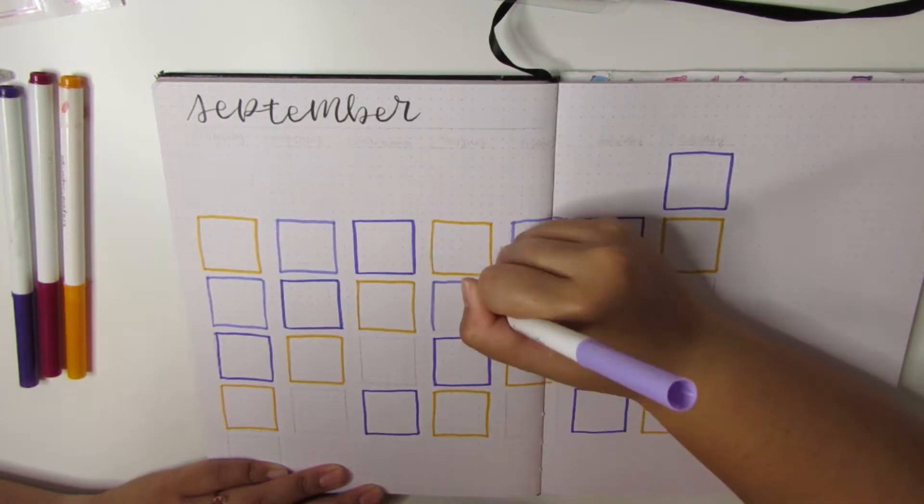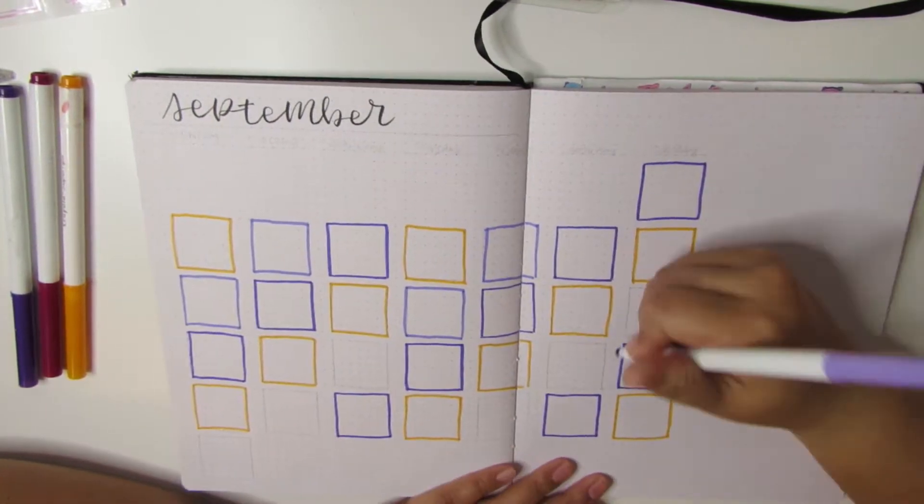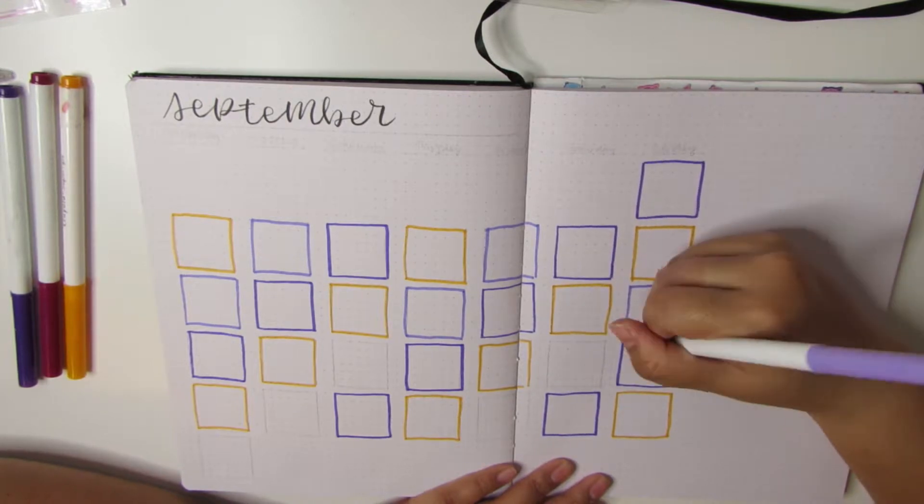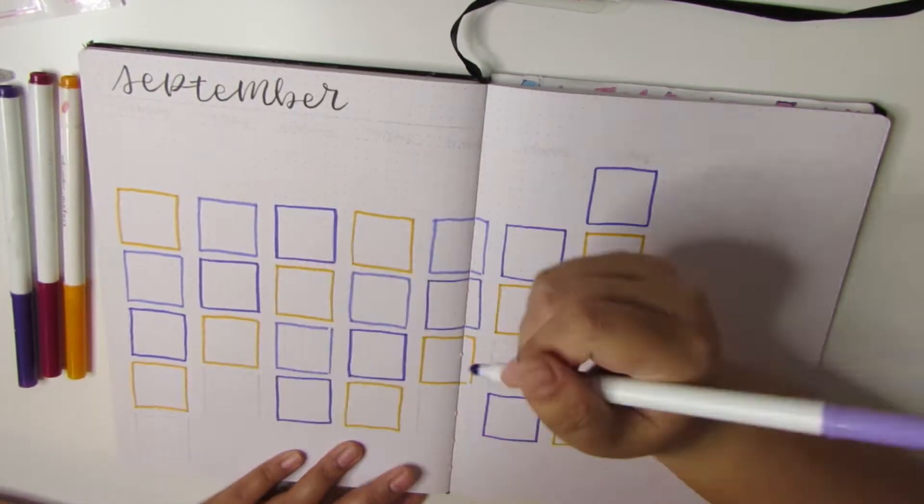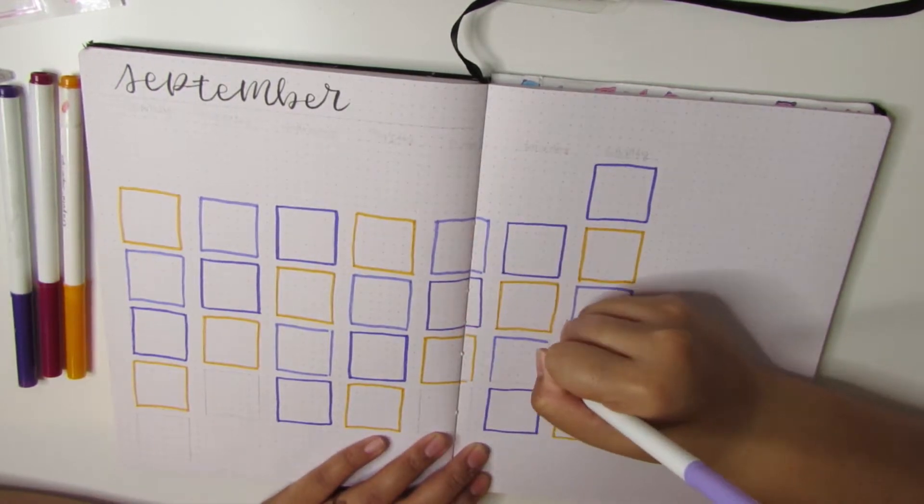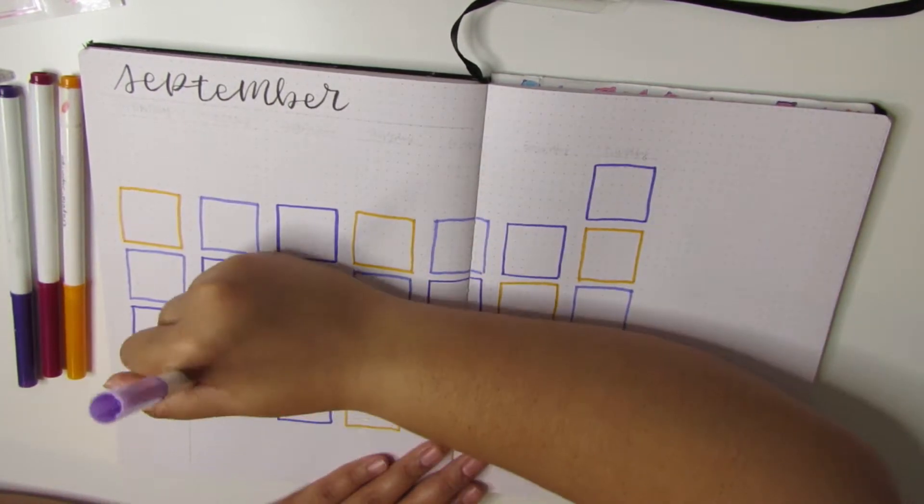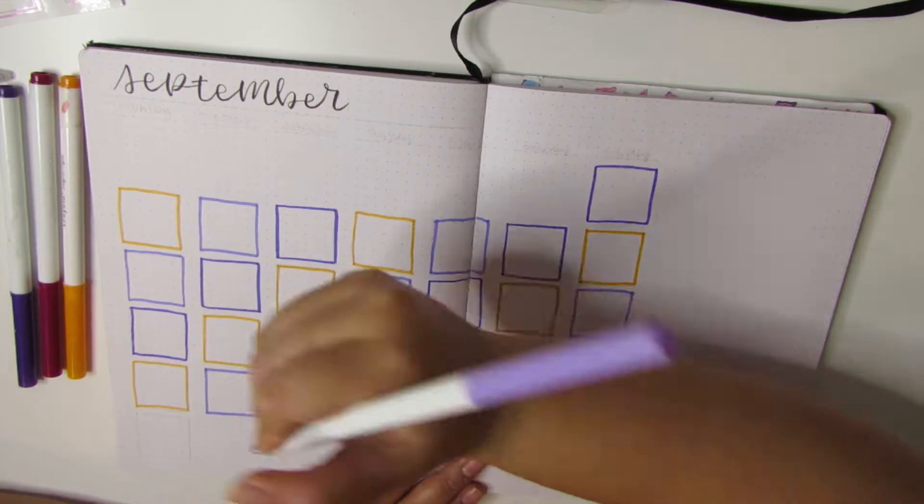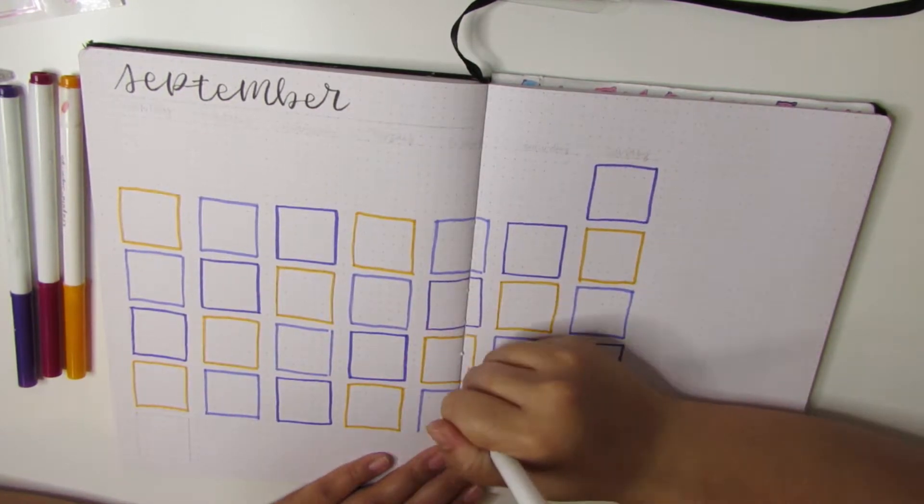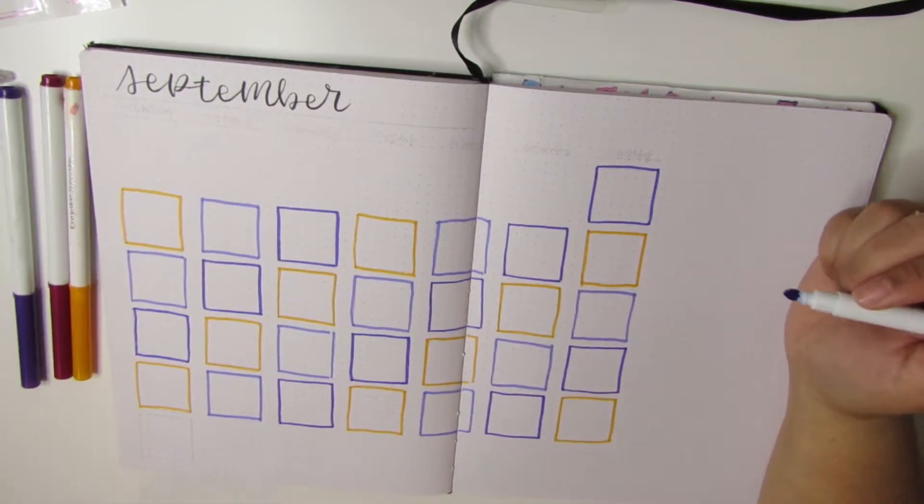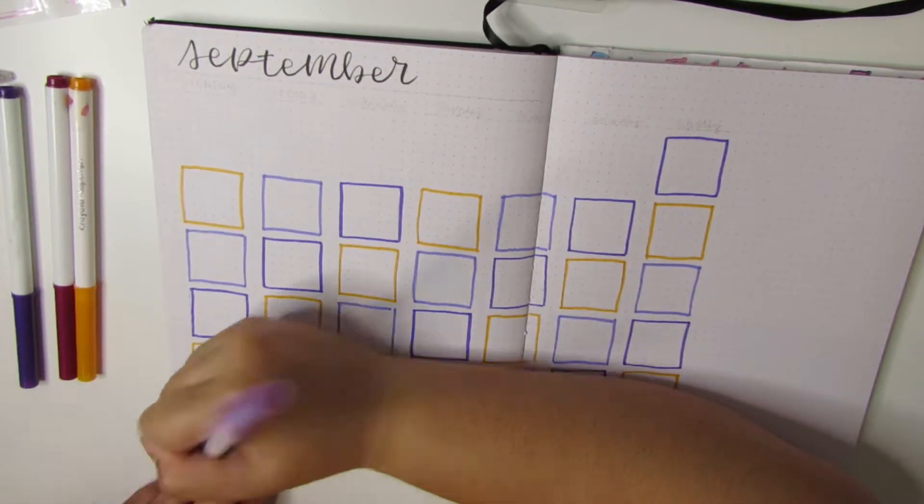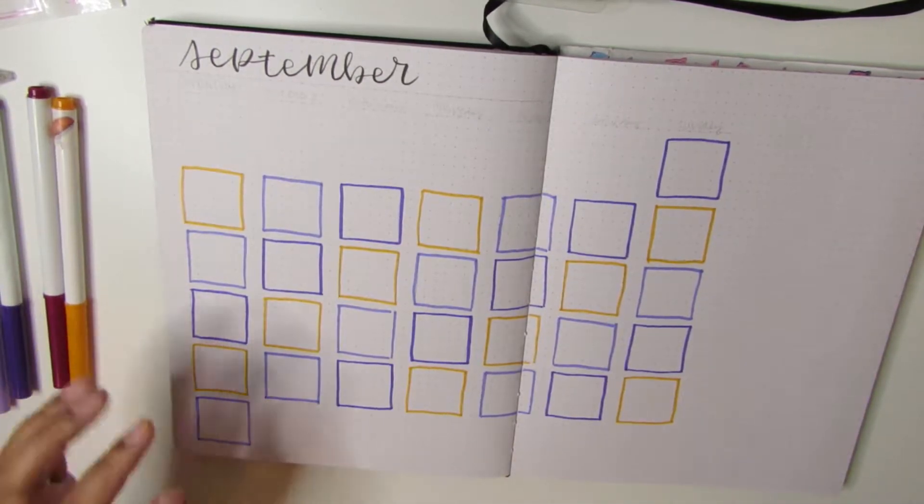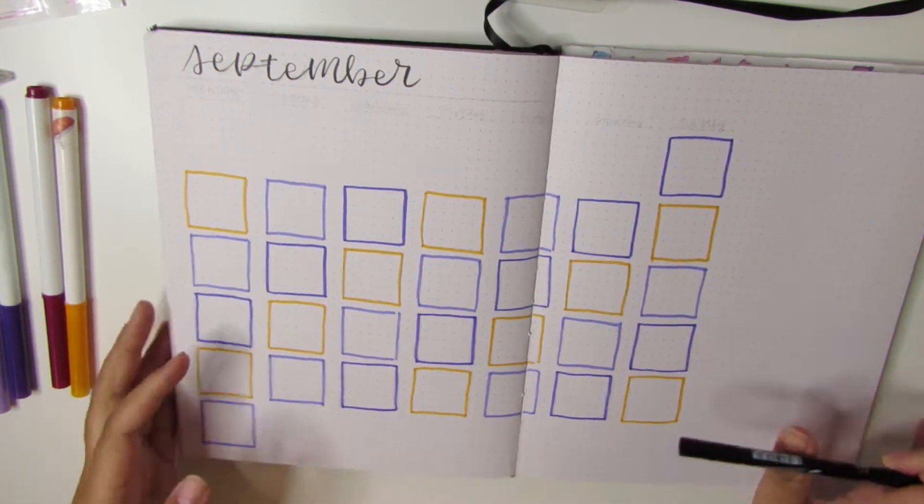This month I'm actually doing one of these calendars. The past couple of months I haven't been doing one because there wasn't a lot to mark down. But for my family, September is the busiest month regarding birthdays. We have a ton of birthdays and it gets difficult to remember where everybody's birthday is.